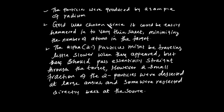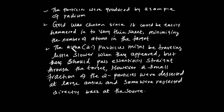Gold was chosen since it could be easily hammered into a very thin sheet, minimizing the number of atoms in the target. The alpha particles might be traveling a little slower when they reached the foil, but they should pass essentially straight through the target.